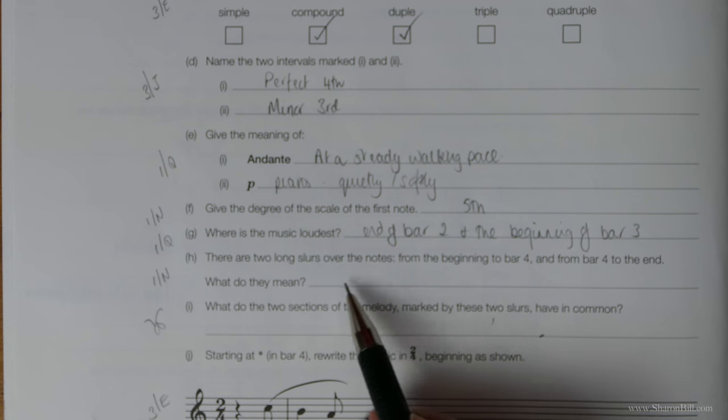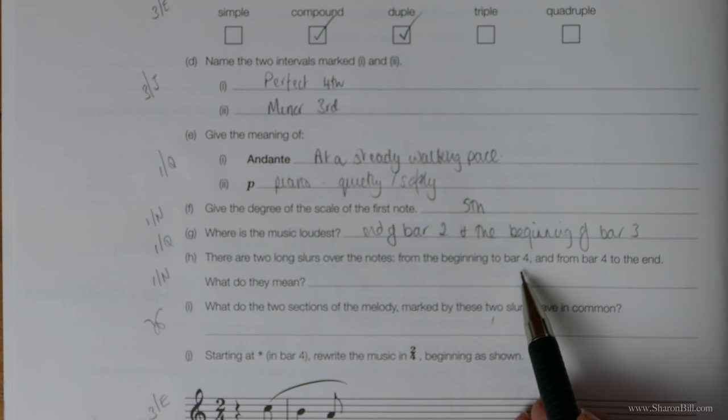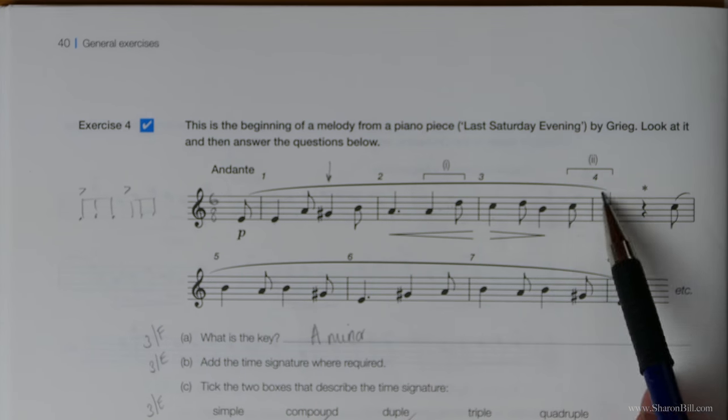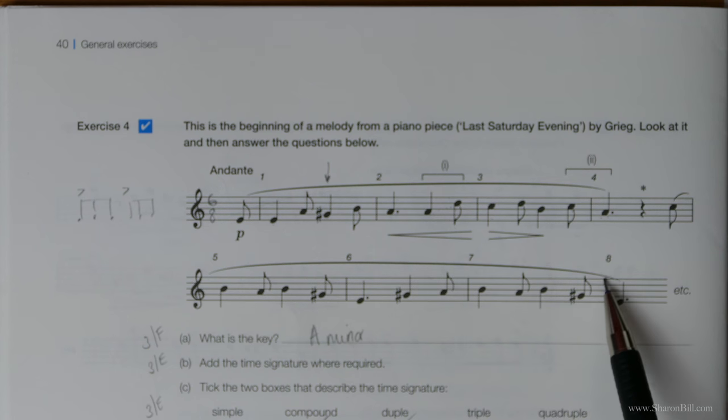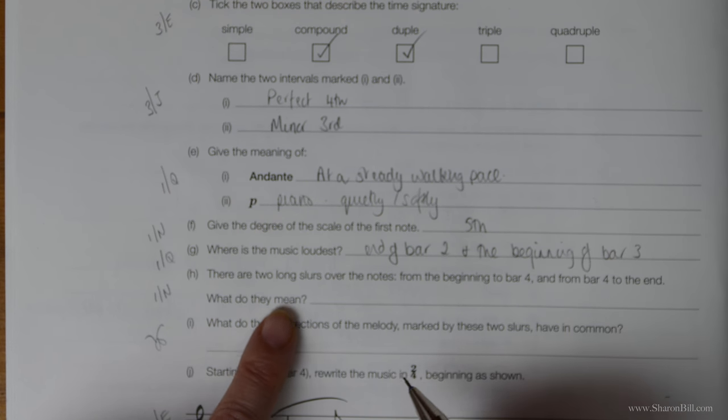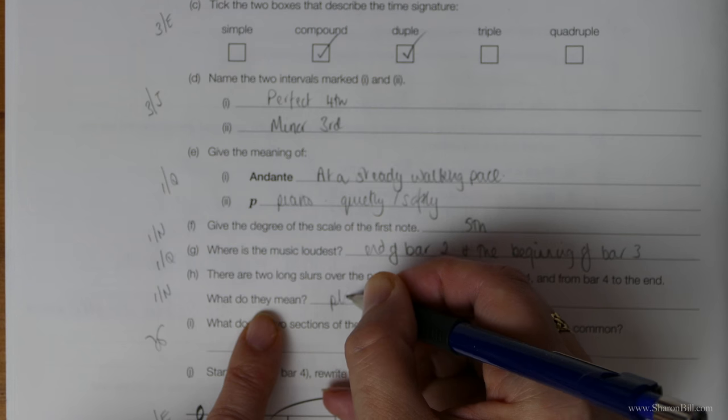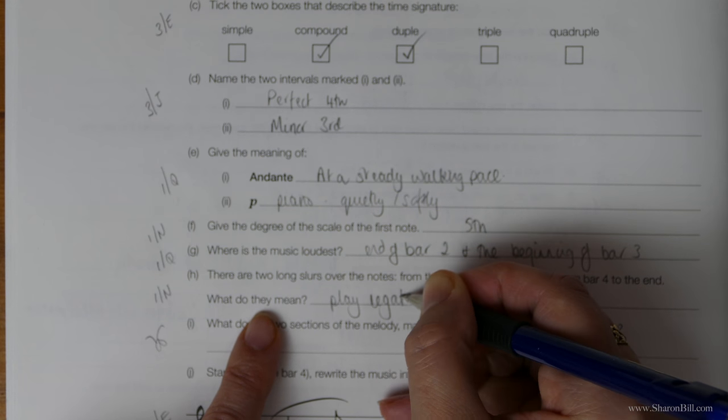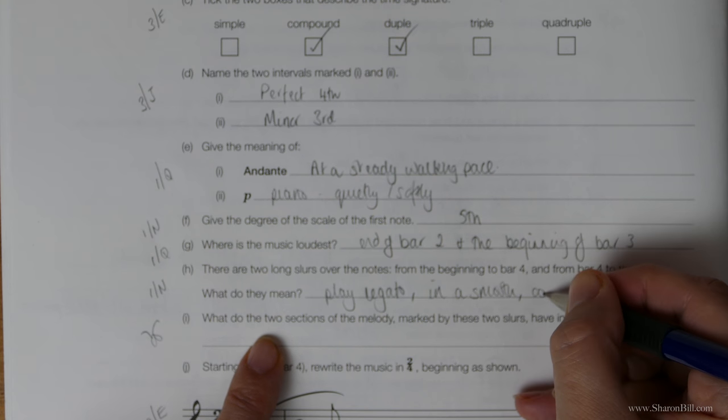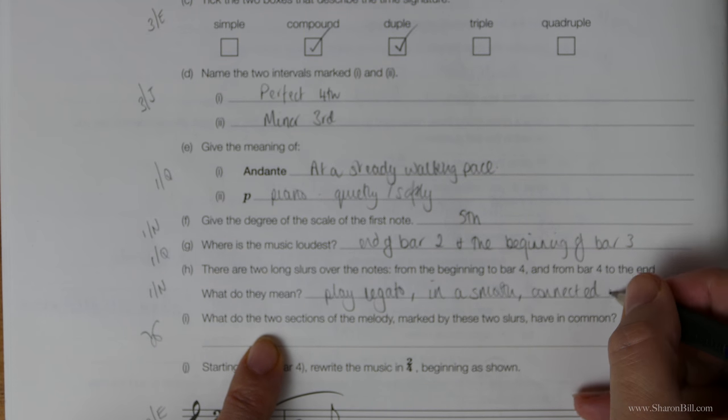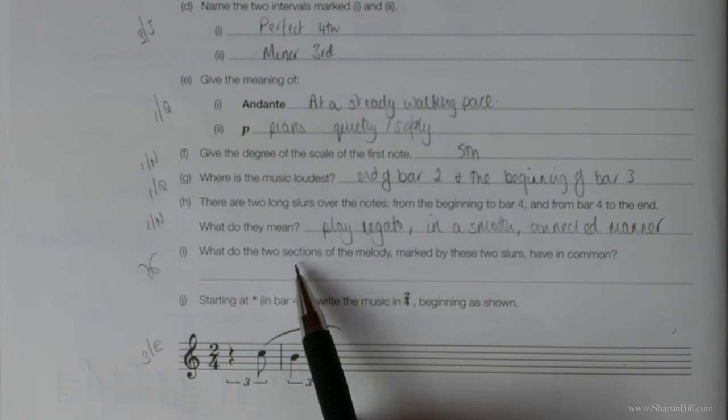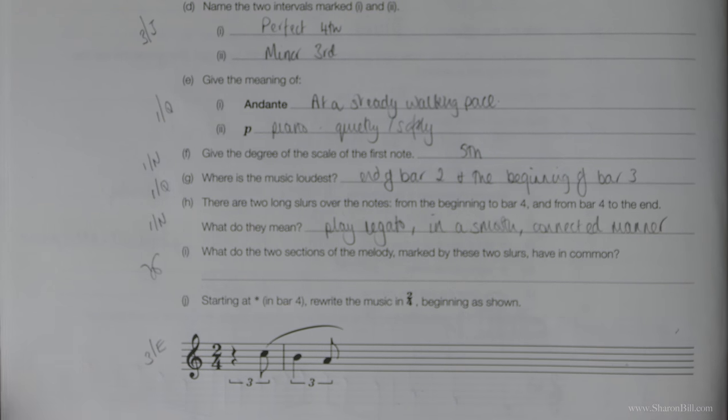There are two long slurs over the notes from the beginning of bar 4. So it's from the beginning to bar 4 and then the second half from the last part of bar 4 all the way to the end. So what do they mean? Those slurs mean to play legato or in a smooth connected manner. I think that explains it fully. I think the main word is legato. But you can always elaborate.